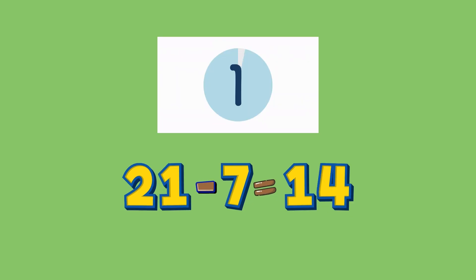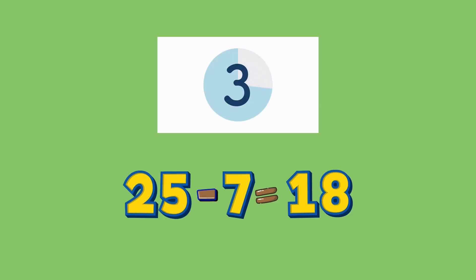Twenty-one minus seven is what friends? Fourteen. Twenty-five minus seven equals what? Eighteen. Good job.